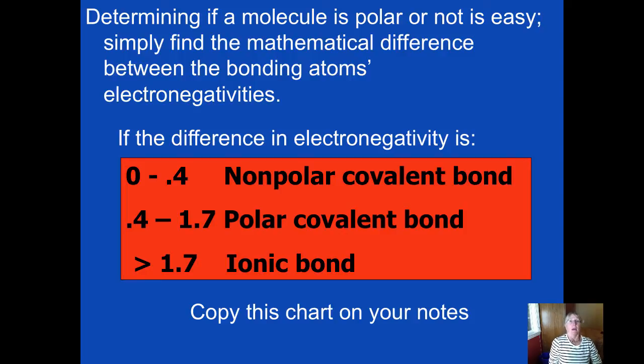Now, finding out if a molecule is polar or not is dead simple, simply find the mathematical difference between the two bonding atoms electronegativities. Now the problem I have with this chart is that it's really shades of gray. And many charts say that if the difference goes from 0 to 0.3, we're going to call that nonpolar. And then 0.4 up to about 1.7, polar covalent bond. They're both sharing, but the polar one is sharing unevenly. Any electronegativity difference beyond 1.7 we'll consider to be ionic, not sharing at all.